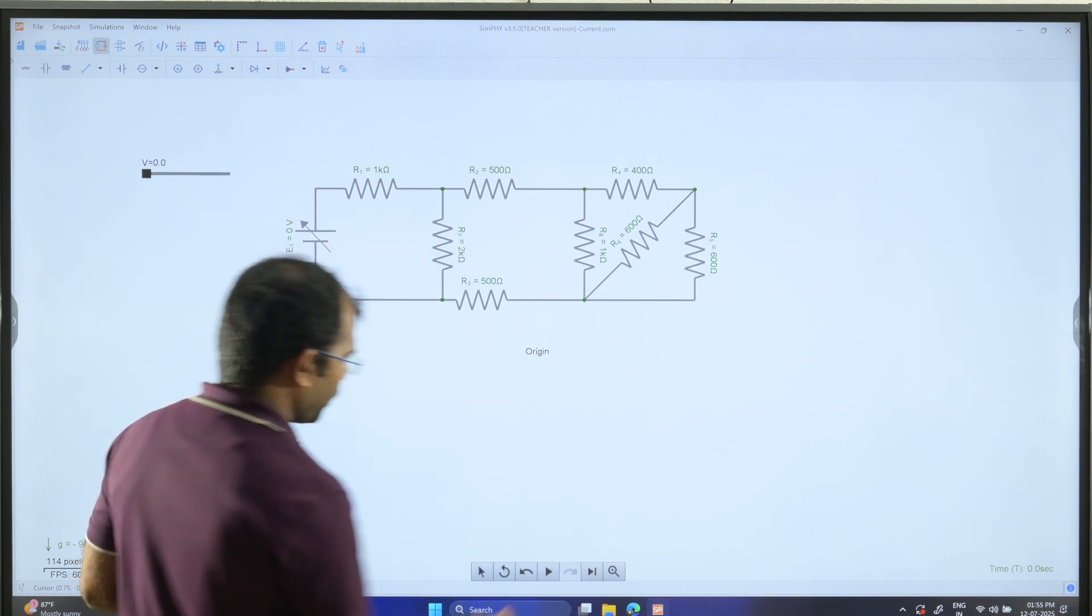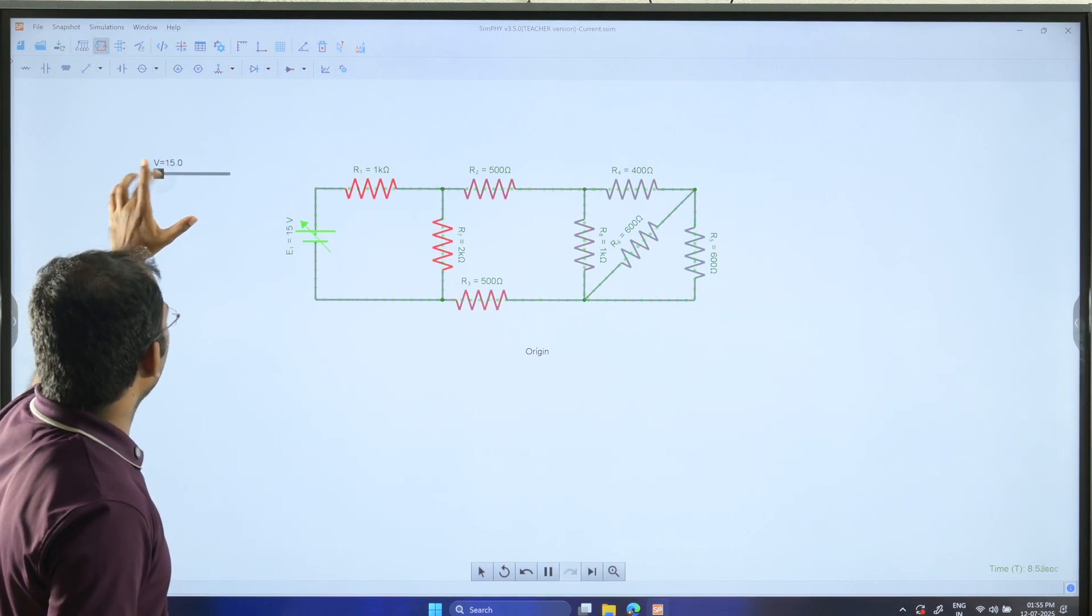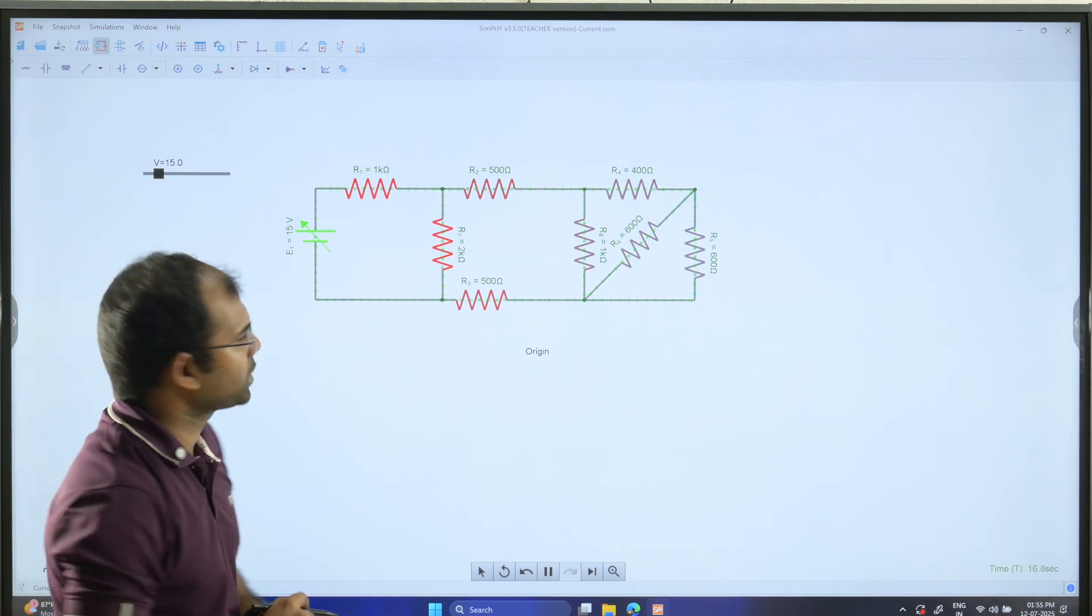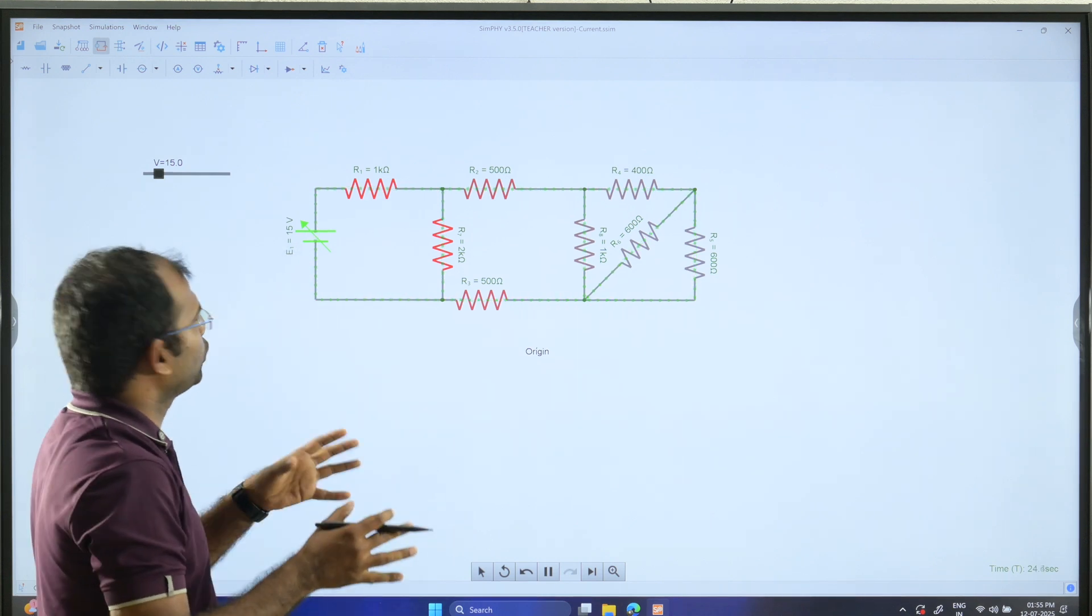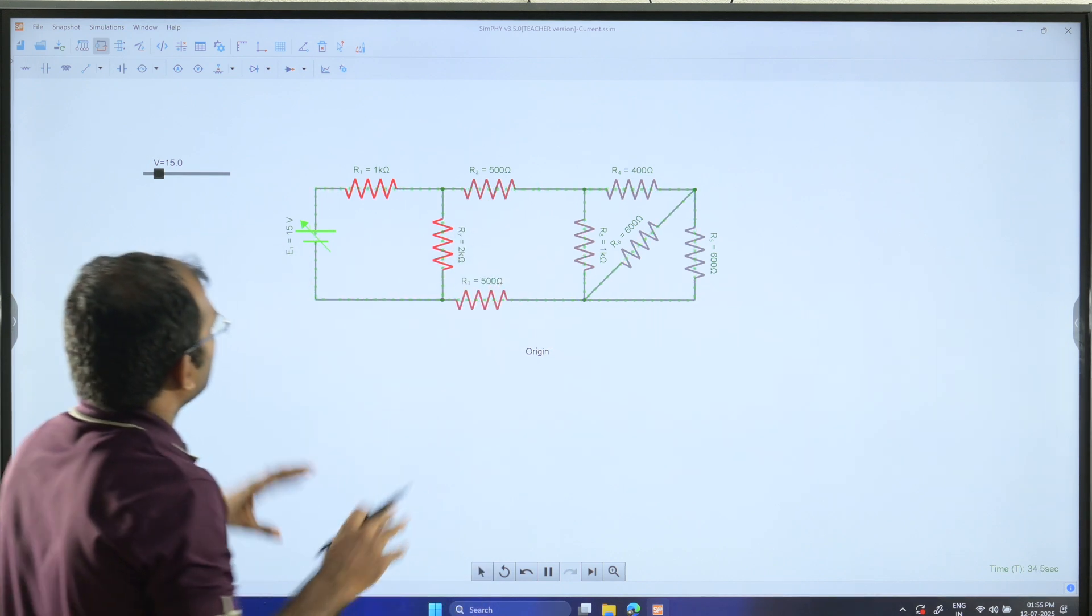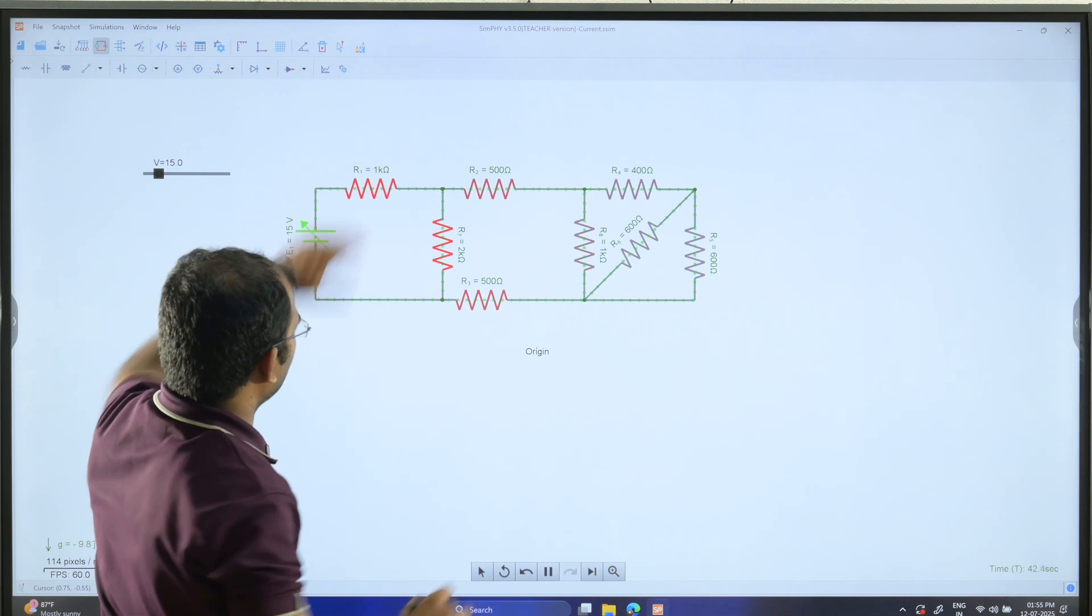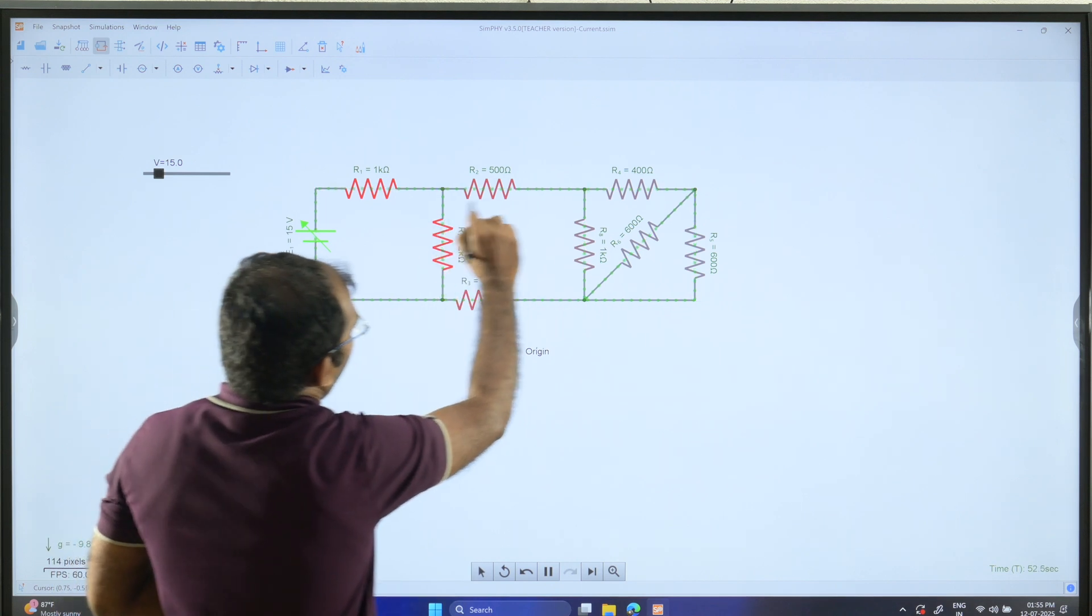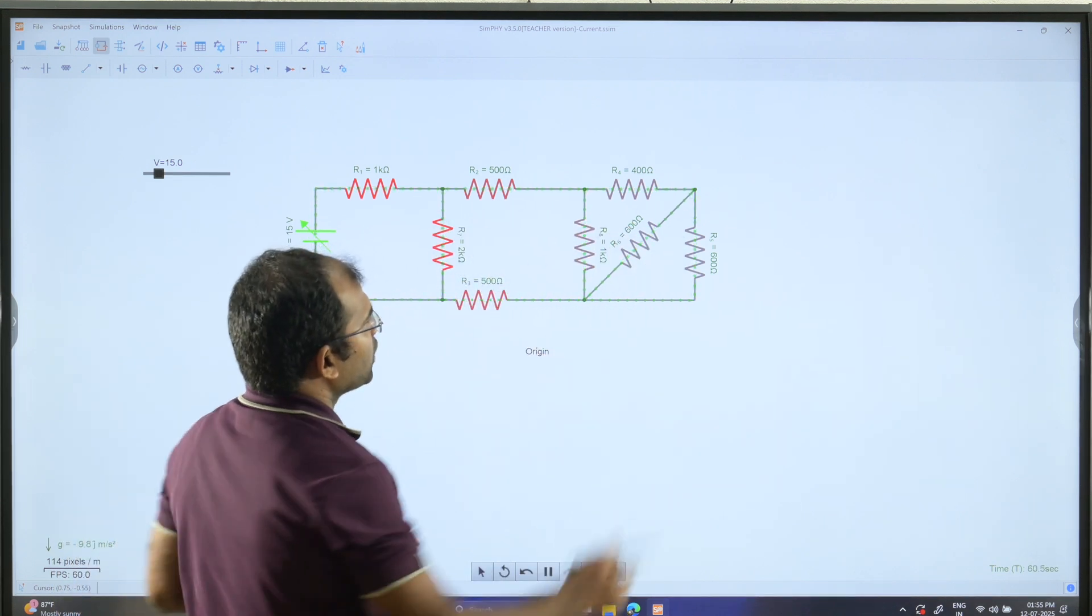Before going to this, let's have a simulation run. I'm going to increase the voltage from 0 to 15 volts. These green dots will represent the movement of current. In the circuit, wherever there is less resistance, current moves faster. These two will have the same rate of movement, but in different conditions, the current movement will differ.